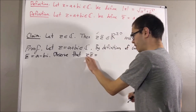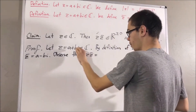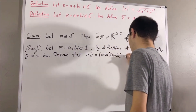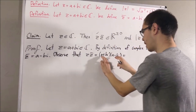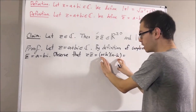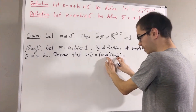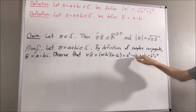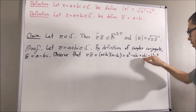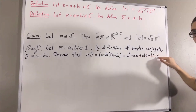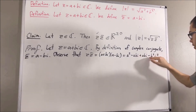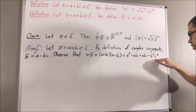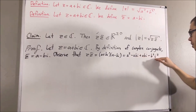Performing z times z bar, we're really just performing (a plus bi) times (a minus bi). Expanding this out, we get a squared minus abi plus abi minus b squared i squared. The two middle terms cancel out, and i squared equals negative one. So negative b squared times negative one gives us plus b squared. Therefore this entire thing simplifies down to a squared plus b squared.